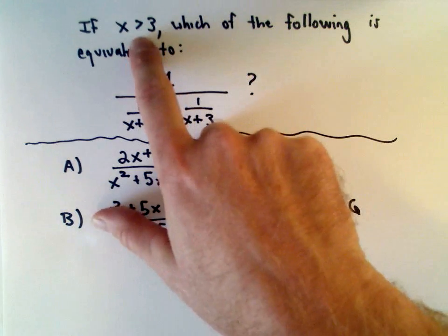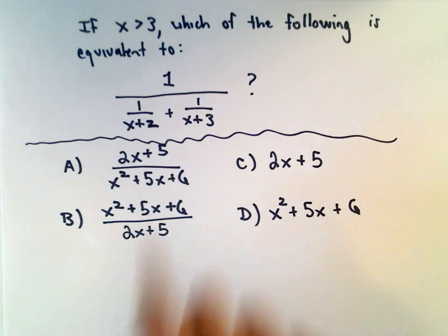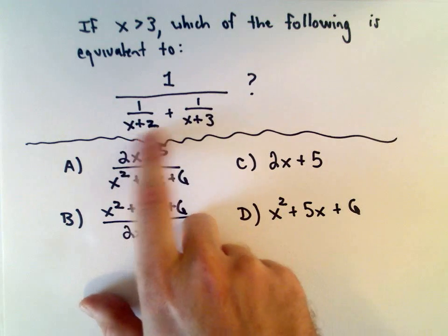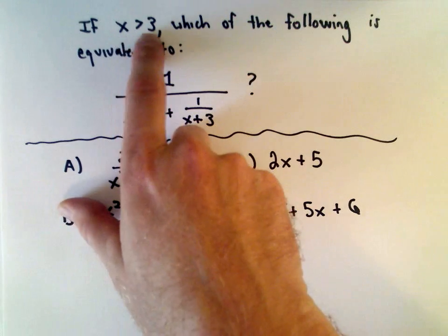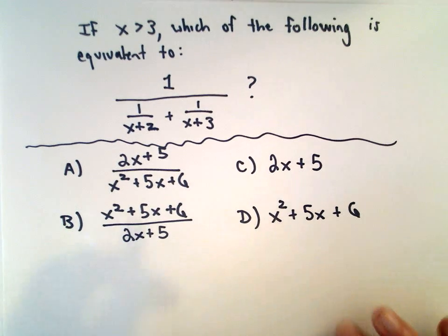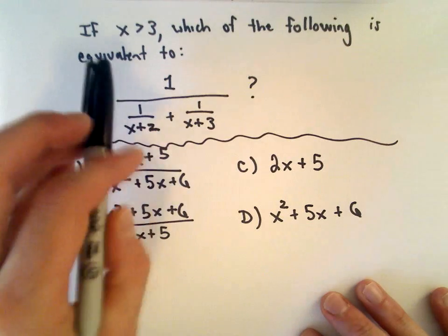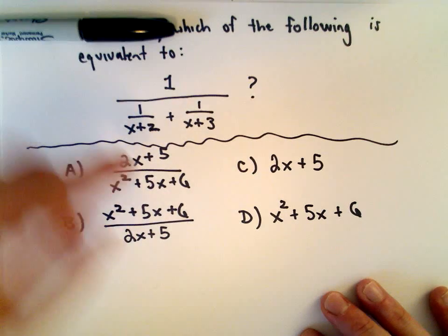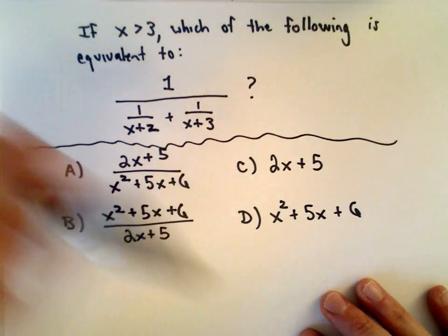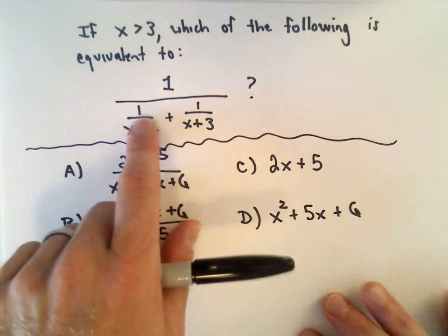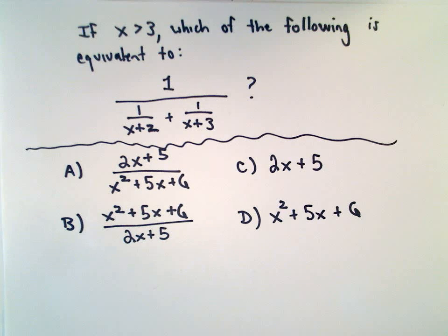In this question, we're given that if x is greater than 3, which of the following is equivalent to 1 divided by (1 over x+2 plus 1 over x+3)? The reason for the restriction x > 3 is that at x = -2 and x = -3, this expression would be undefined. The test makers are being crystal clear that there's no ambiguity and no places where a student could make an argument about it not being equivalent.